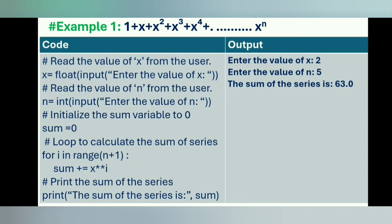We initialize the sum variable to 0. We use a for loop to calculate the sum of the series. We can also use a while loop to calculate the sum of the series. The loop iterates from 0 to n, because the default value of the starting point of the range function is 0, and the ending point n+1 is not included. In each iteration, x is raised to the power of the current index value of i. The double asterisk sign is used for this purpose. Then it is added to the sum variable using the shorthand assignment operator plus equals.